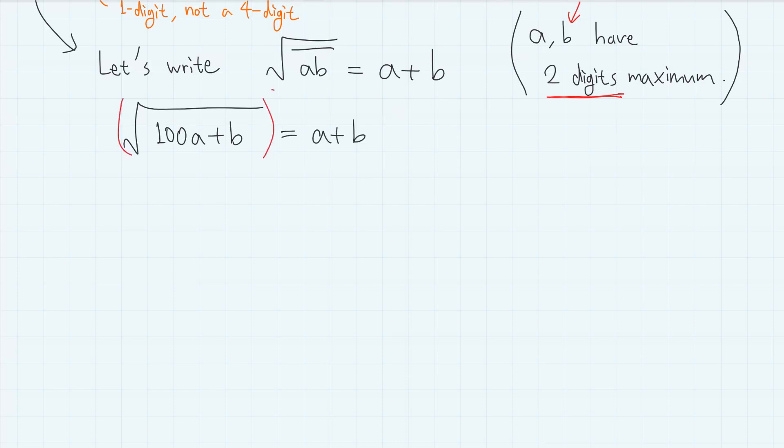So by squaring both sides, we have 100a plus b equals a squared plus 2ab plus b squared. And let's rearrange this as a quadratic equation of a, which is a squared, then 2 times (b minus 50)a, then plus b squared minus b equals 0.